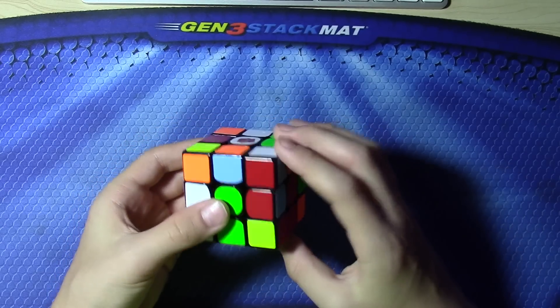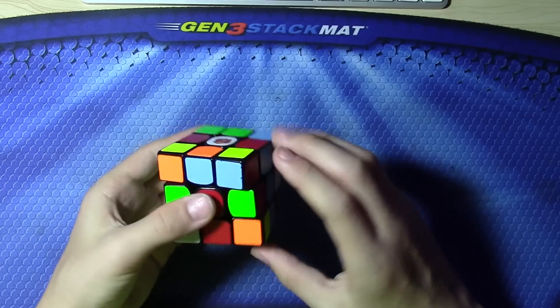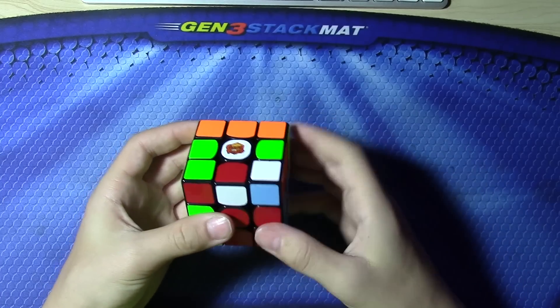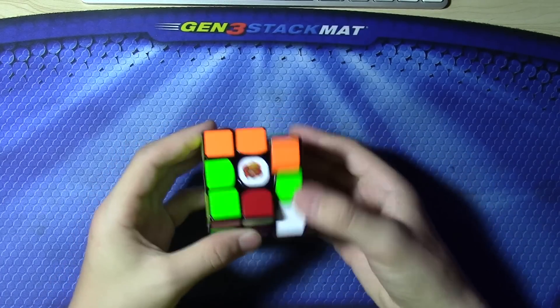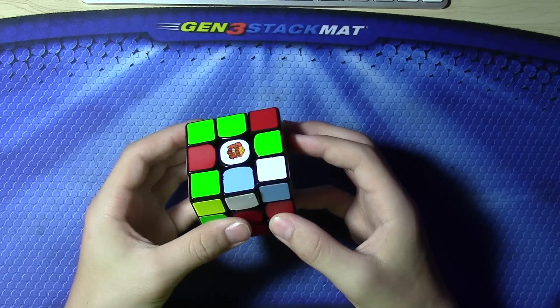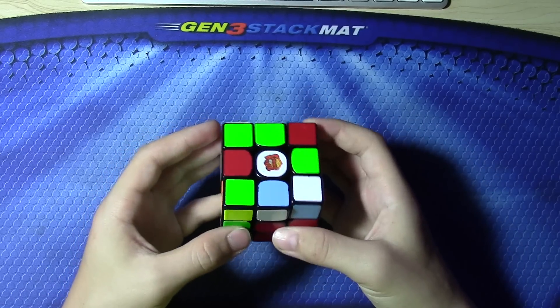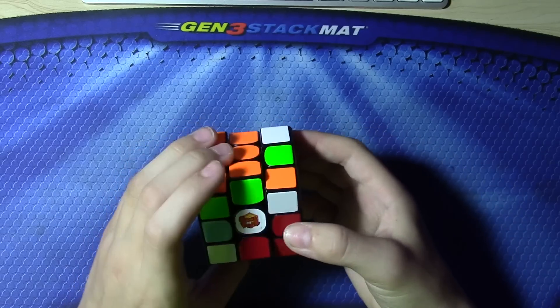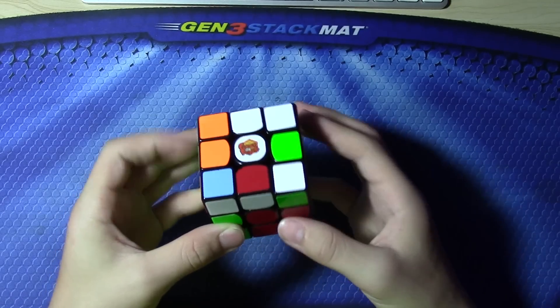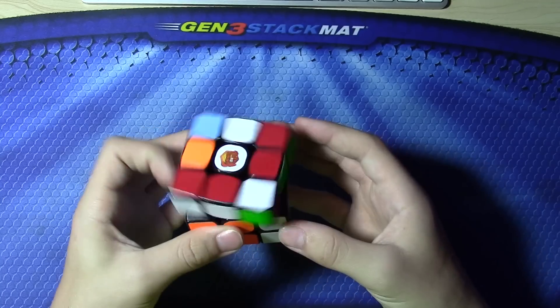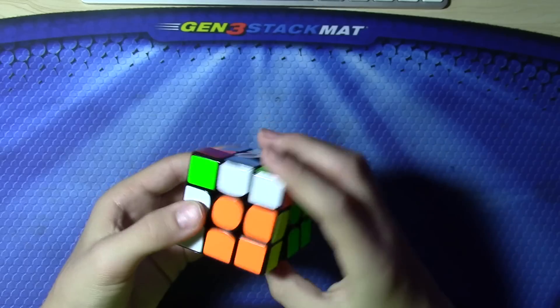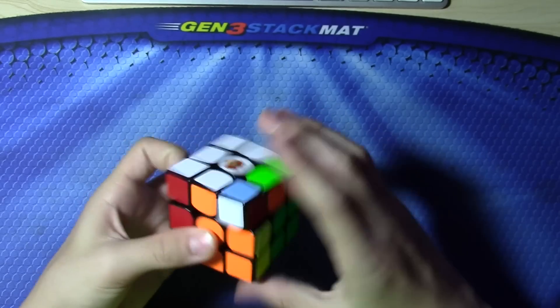I think I would see this pair first, so I would take it out, and then put it in. I would see probably this pair next, and just insert it. Then this, and then rotate this last pair, and then OLL, and G perm.